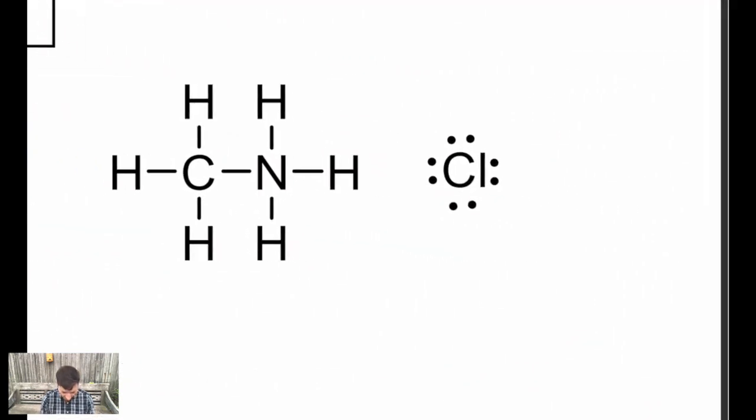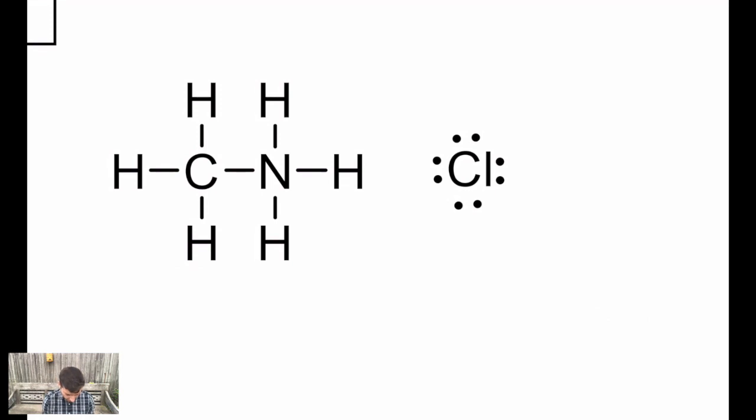Lastly, we have methyl ammonium chloride. The carbon is already good with four single bonds. The nitrogen, a valence of five minus four bonds minus no lone pairs. That's a plus formal charge. The hydrogens are all good. The chlorine over there, that's a valence of seven. It's a halogen minus no bonds, but minus eight unshared electron dots. That's a negative one charge. That should make sense. That's a chloride anion, Cl minus the common anion that we should be familiar with for our halogens.